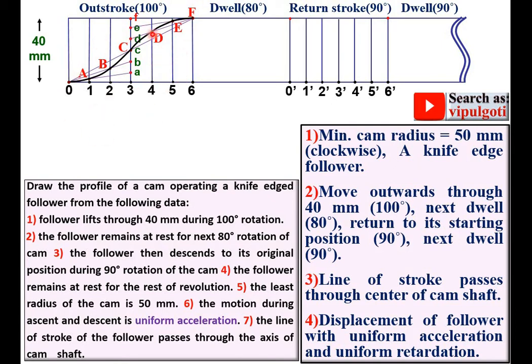If it is uniform velocity then it must be the straight inclined line. So first divide the center line of the return stroke into the six equal parts and give the name as A dash, B dash, C dash, D dash, E dash and F dash.